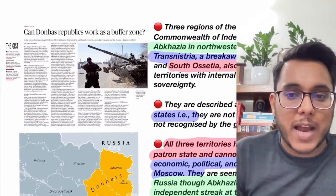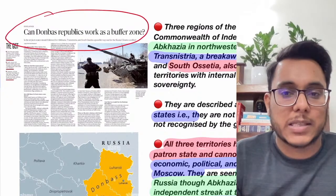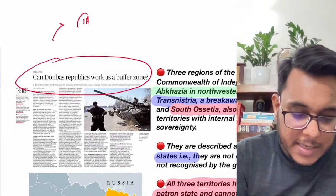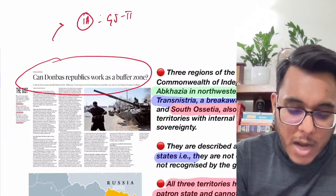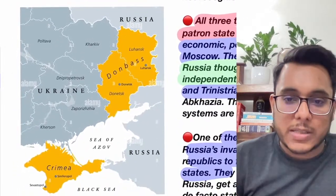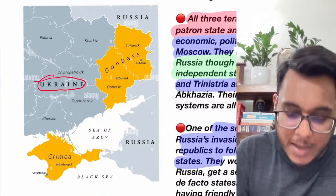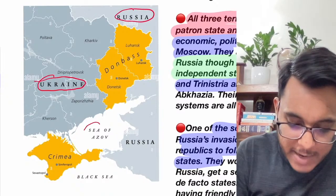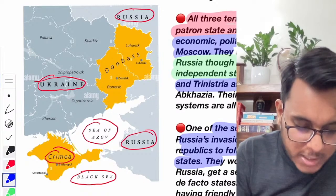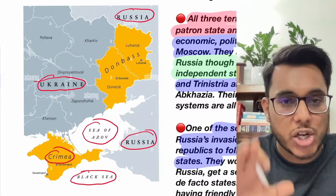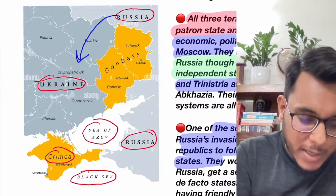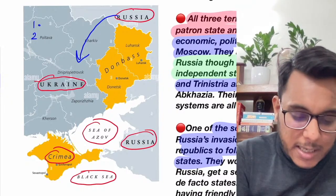Now, the article from The Hindu: 'Can Donbass Republics Work as a Buffer Zone?' We look at this under international affairs. First, let's understand the Donbass region. Looking at the map: here is Ukraine, here is Russia, here is the Sea of Azov, here is Crimea, and here is the Black Sea.